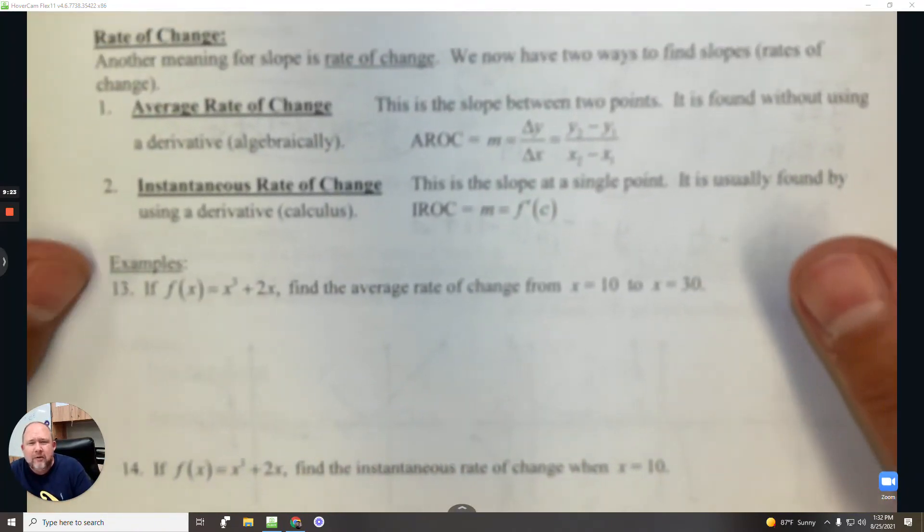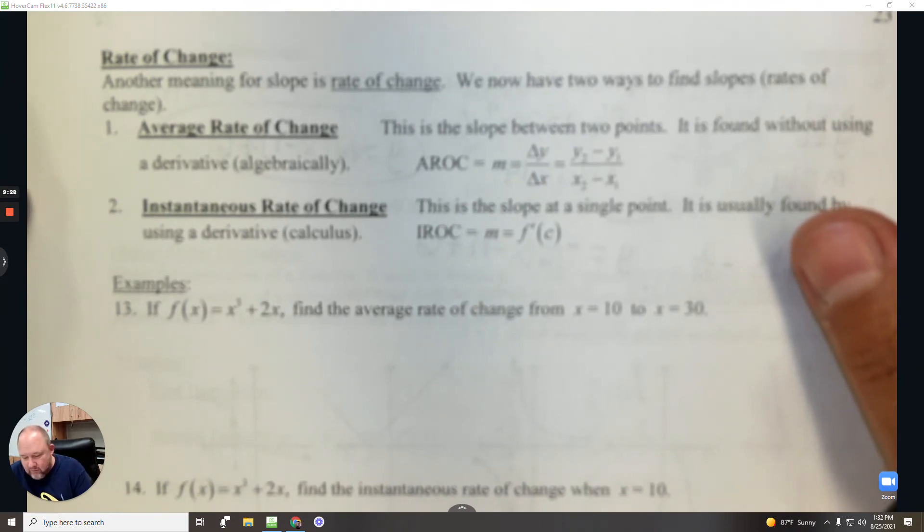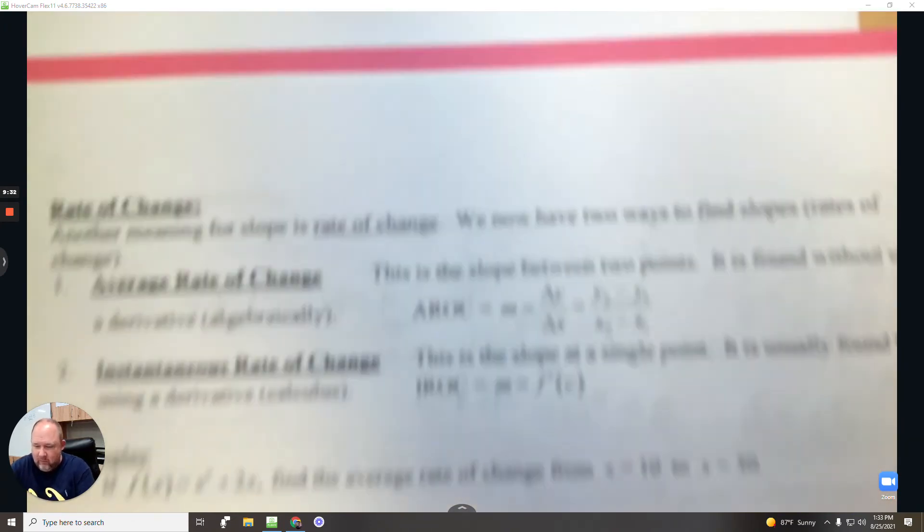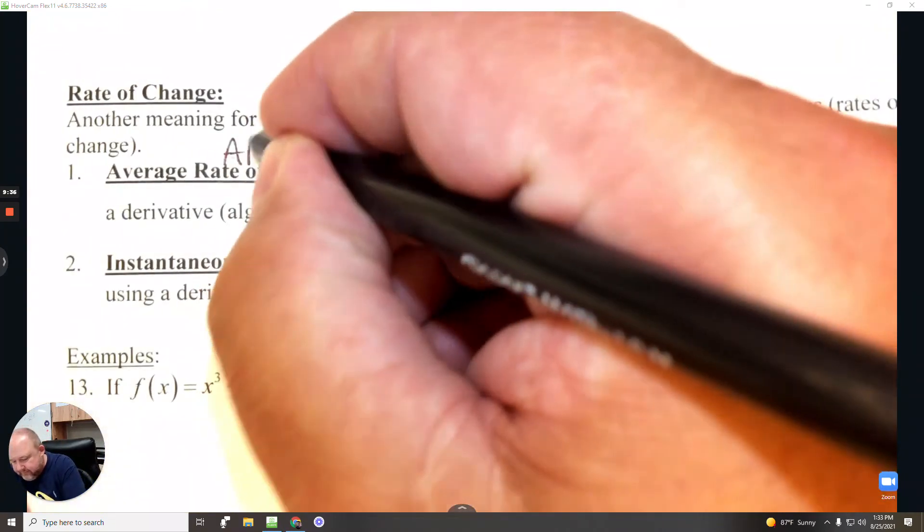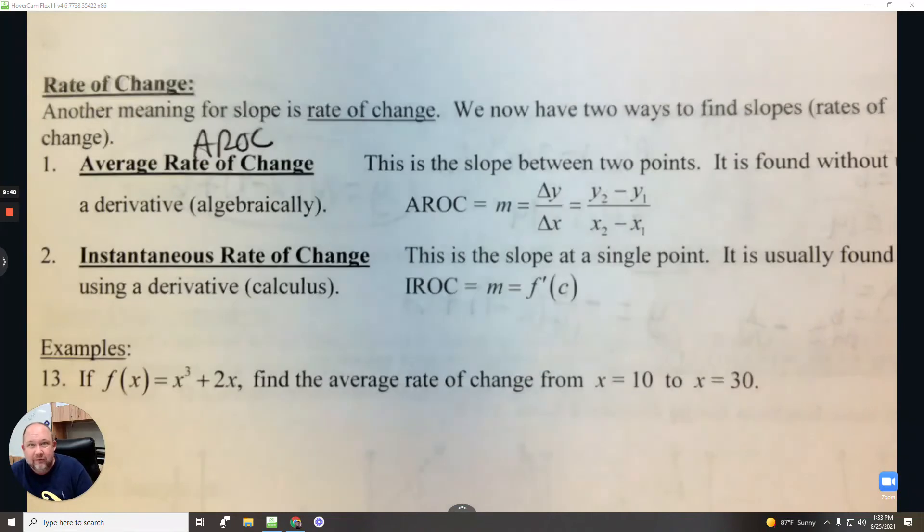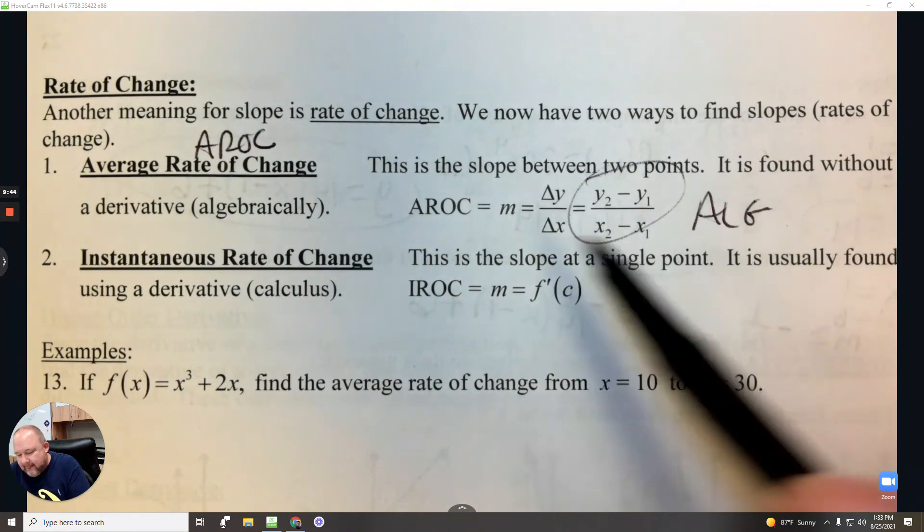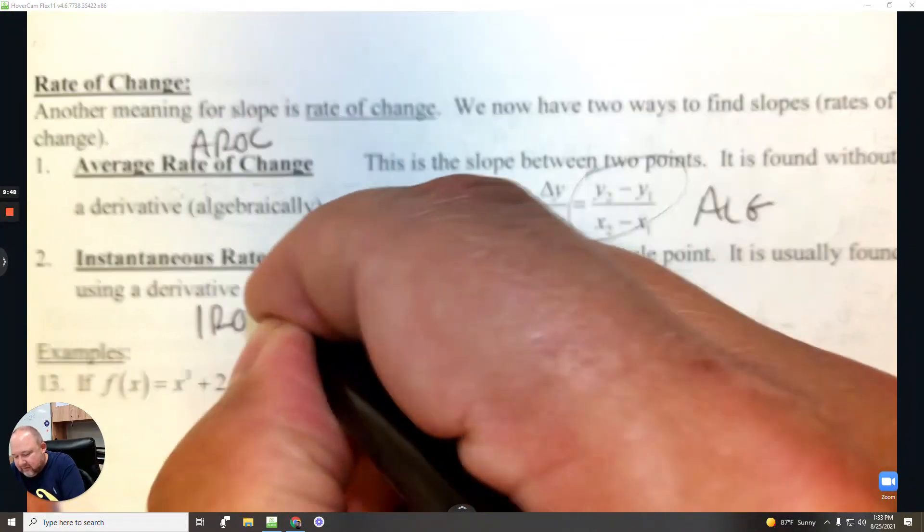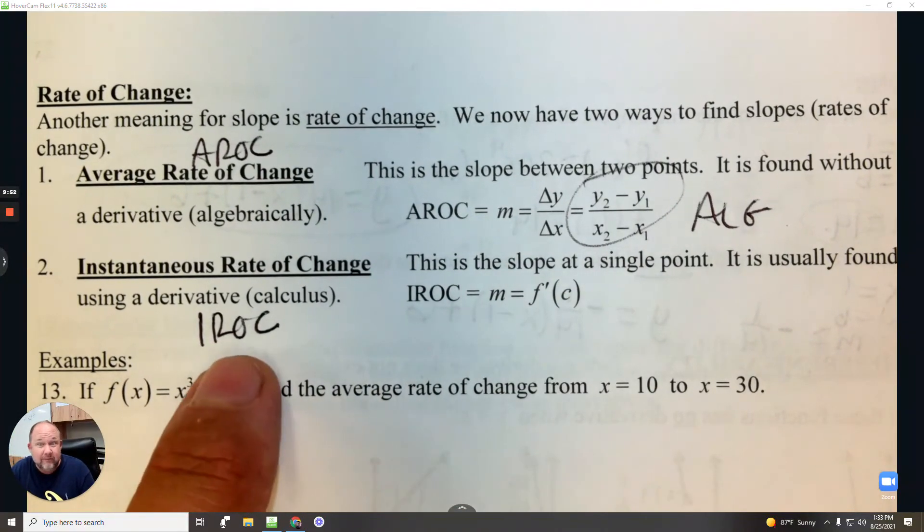Alright, last part of the lesson, rate of change. Another meaning for slope is rate of change. We now have two ways to find slopes. One is the way you learned in algebra, and sometimes we call this AROC, which is average rate of change. It's y2 minus y1, x2 minus x1. This is algebra. And then the second way is the instantaneous rate of change. That's calculus. This involves taking the derivative to find it, and we sometimes say IROC.